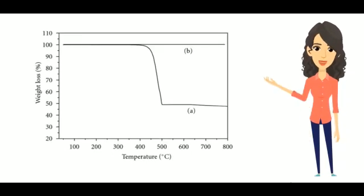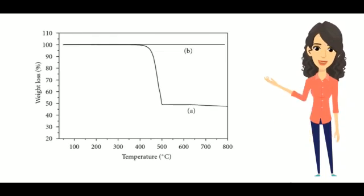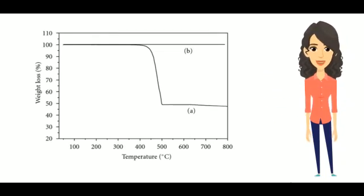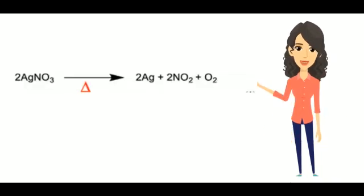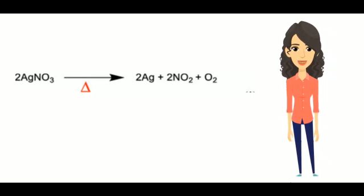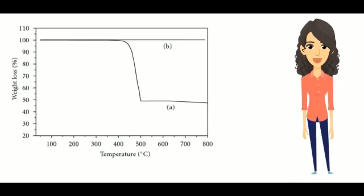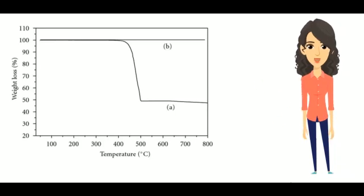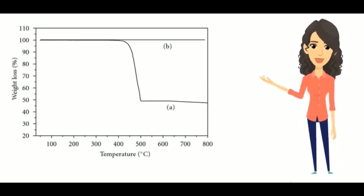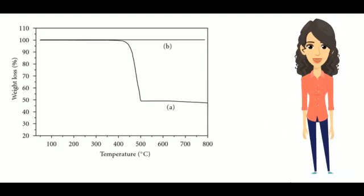Weight change starts at 473 degrees centigrade, which means AgNO3 starts to decompose at this temperature. This equation shows the decomposition of AgNO3. Decomposition continues up to 608 degrees centigrade, leaving metallic silver as a stable residue.